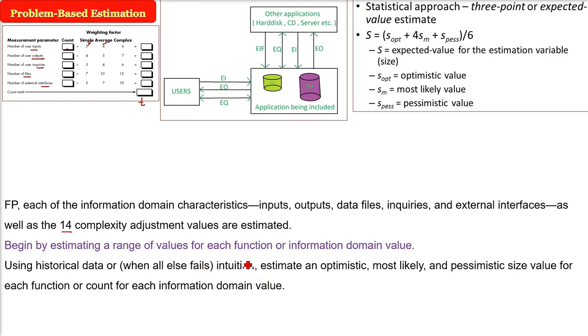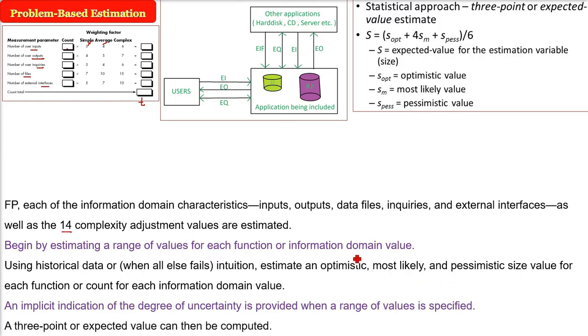Using historical data and intuition, we'll use the optimistic, most likely, and pessimistic size value for each function or count for each information domain value. This three-point value or expected value I'm talking about.